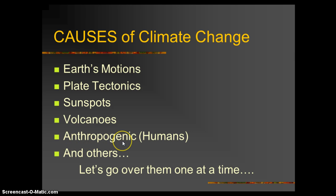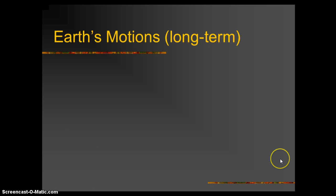Another cause is anthropogenic — a new vocabulary word. Anthropogenic means human-caused. 'Anthro' comes from anthropology, the study of humans, and 'genic' means cause. So anthropogenic means human-caused. There are also a couple of other causes we'll look at.